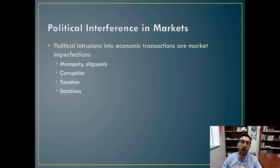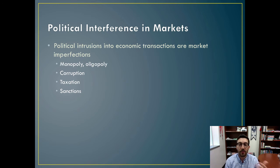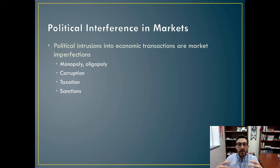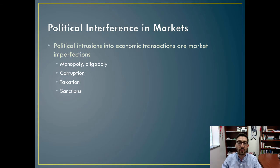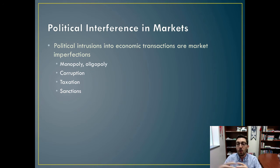Sanctions are another form of political intrusion. When countries disagree with the way that other countries are engaging in their own behavior, they may send a signal about their displeasure through a sanction. For a long time the United States has sanctioned countries like Iran, Iraq, and even Cuba. These sanctions introduce a market imperfection because it means your country won't be able to trade certain goods with the sanctioned country, so there won't be a perfect free market flow of goods and services.